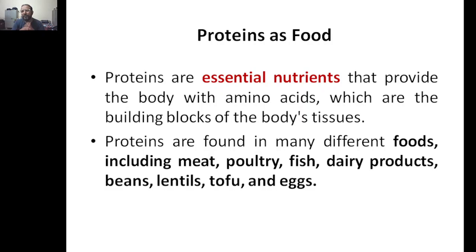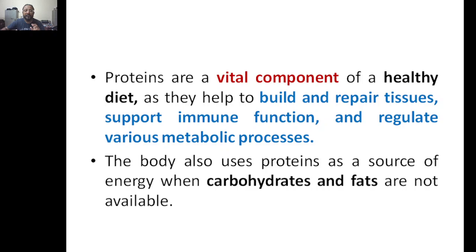Other functions include providing mechanical support and regulating cell behavior. Proteins as food are essential nutrients that provide the body with amino acids, which are the building blocks of the body's tissues. Proteins are found in many different foods: meat, poultry, fish, dairy products, beans, lentils, tofu, and eggs. Proteins are vital components of a healthy diet as they help to build and repair tissues.